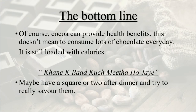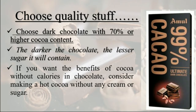The bottom line is that cocoa provides a lot of health benefits, but that doesn't mean we should consume a lot of dark chocolate — it is still loaded with calories. You can have dark chocolate after dinner, but only one or two squares are enough. When buying dark chocolate, always choose one with more than 70 percent cocoa — the higher the cocoa content, the less sugar it contains and the more beneficial it is for health. The darker the chocolate, the lesser the sugar and the better for our health.